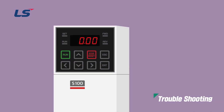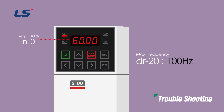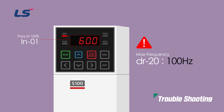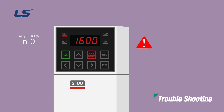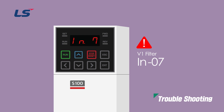The frequency at 100% input can be set in the IN01 parameter. Please be sure to check, as it is not always linked to the maximum frequency. If you set the maximum frequency to 100 Hz and want to drive at 100 Hz when the analog voltage reaches maximum, you must also change the value of the IN01 parameter accordingly. If the analog signal contains noise components, set IN group number 7, V1 filter high.